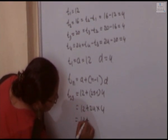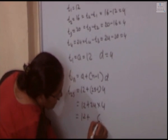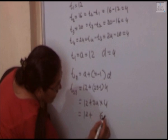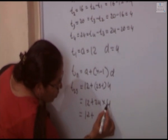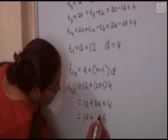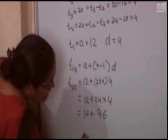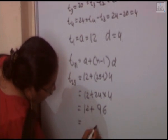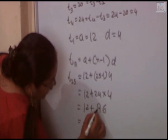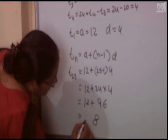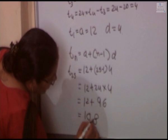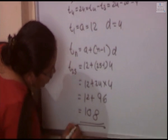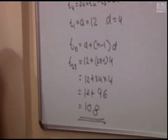So 12 plus, 25 minus 1 is 24 multiplied by 4. 24 times 4 is 96. So 12 plus 96, the answer comes 108. T25 equals 108.